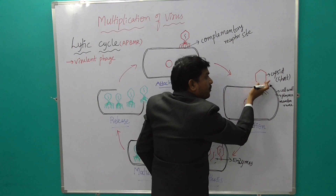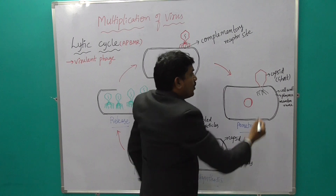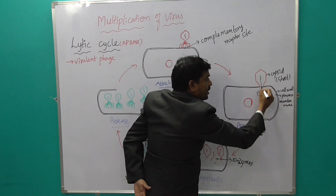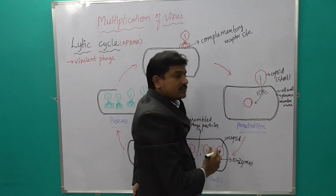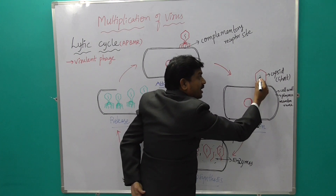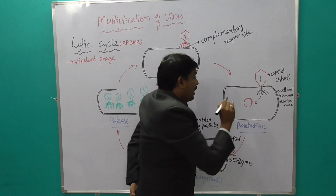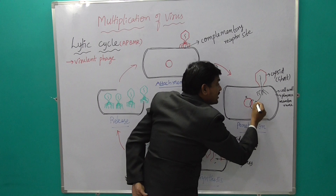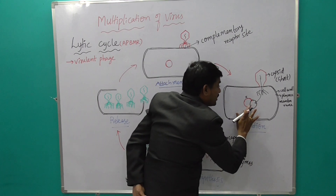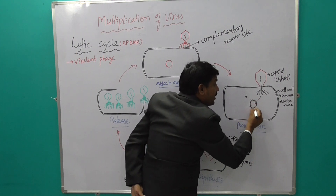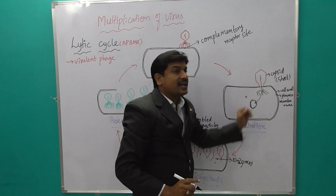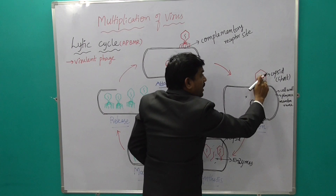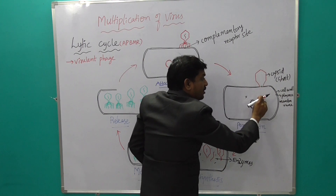The capsid remains outside the cell. The DNA inside the capsid moves from the capsid through the tail and enters within the E. coli bacteria. When the phage DNA enters the E. coli bacteria, the bacterial DNA is degraded, and only the phage DNA remains present inside.